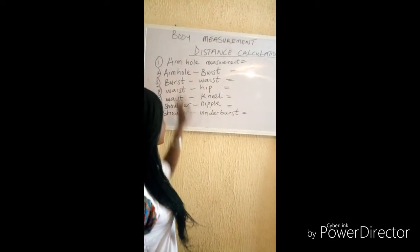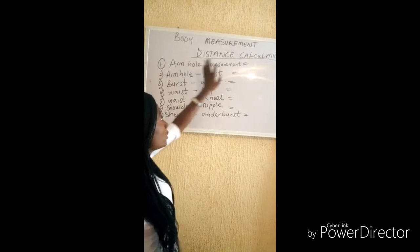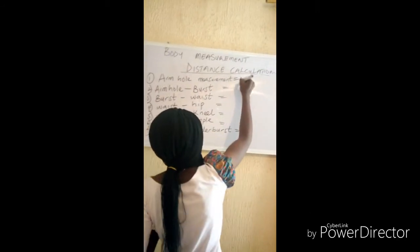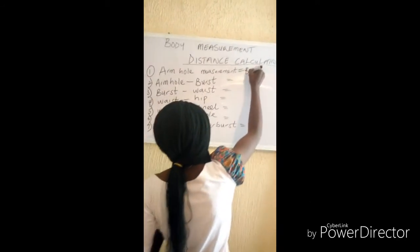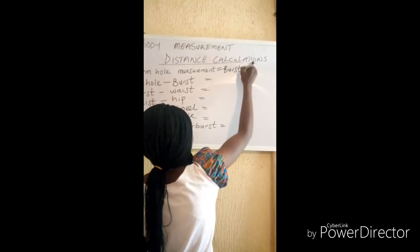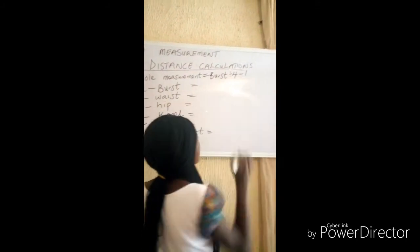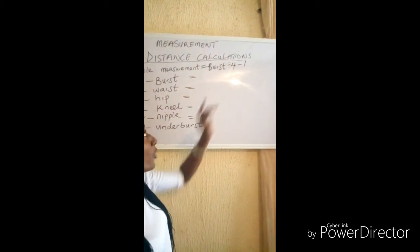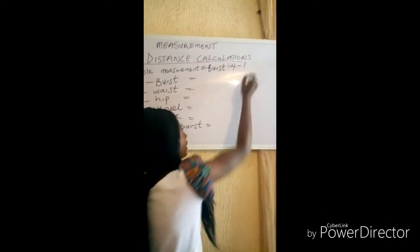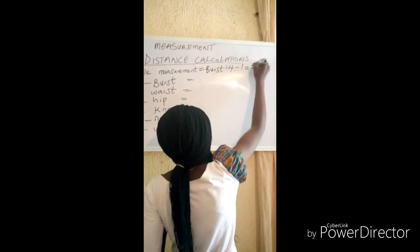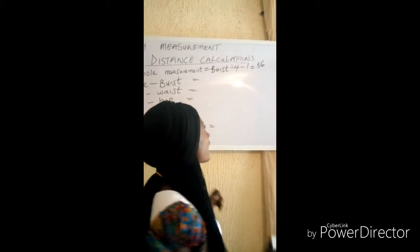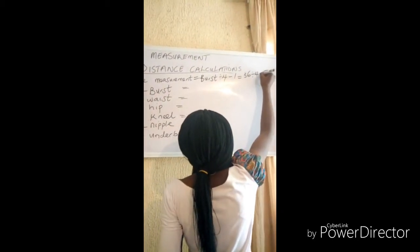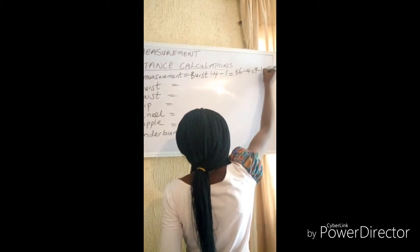The first one we have is our armhole measurement. To get your armhole measurement, you take your bust measurement divided by 4, minus 1. So taking 36 as the bust measurement, we have 36 divided by 4, which is 9, minus 1.